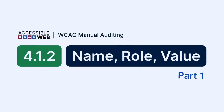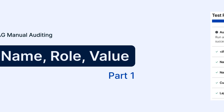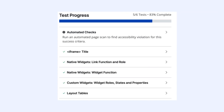Accessible Web — WCAG manual auditing. Hi, and welcome to part one of our walkthrough on testing Success Criterion 4.1.2 Name, Role, Value using RAMP's audit grid and Chrome extension. In this first part, we'll cover automated checks, iframe titles, native widgets, and layout tables. Let's jump in.